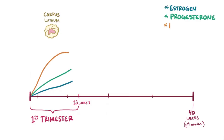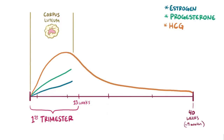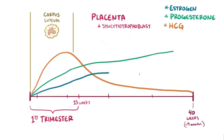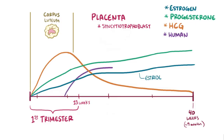By around week nine, HCG levels peak and then begin to fall off, which is a signal for the corpus luteum to finally start shriveling up. Luckily, just as the corpus luteum is shriveling up, the placenta takes over, and specialized trophoblast cells called syncytiotrophoblast cells make progesterone and estriol, which is the most abundant type of estrogen. The placenta also makes a bit of HCG, as well as another hormone called human placental lactogen, or HPL, which counters the effect of maternal insulin to help ensure there's plenty of glucose available in the blood for the fetus.